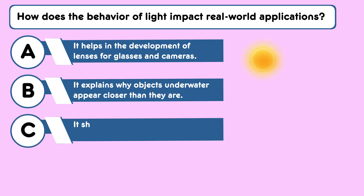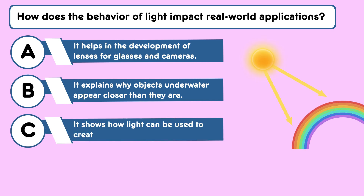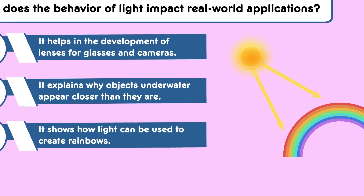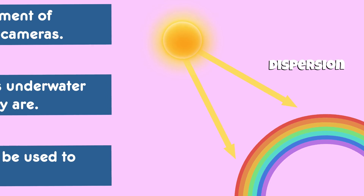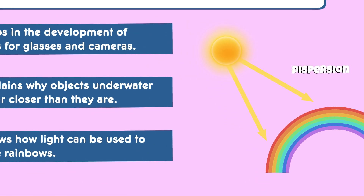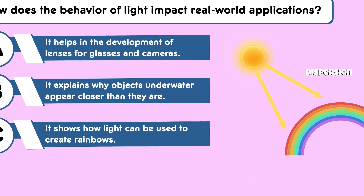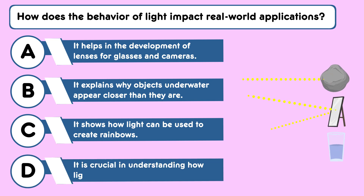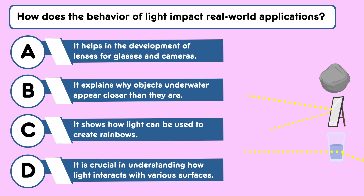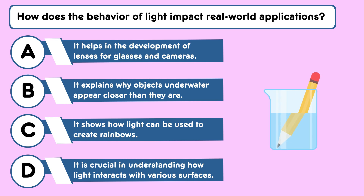Answer choice C: it shows how light can be used to create rainbows. Quick tip — consider how dispersion is used to create rainbows. How does the separation of light into colors relate to this phenomenon? Answer choice D: it is crucial in understanding how light interacts with various surfaces. Quick tip — understand the broader implications of light behavior in different environments. How does this knowledge apply to the interaction of light with surfaces?